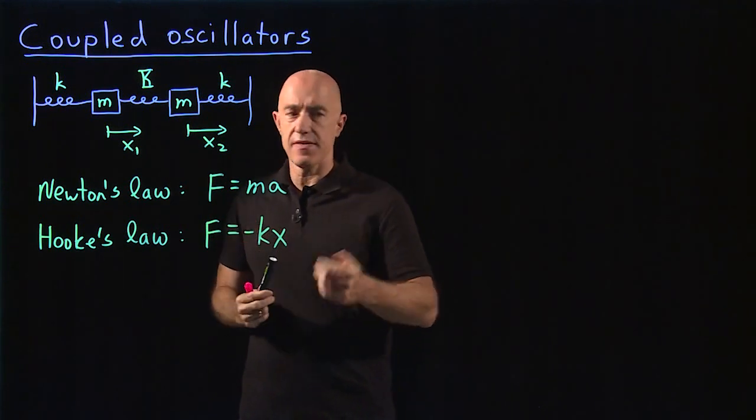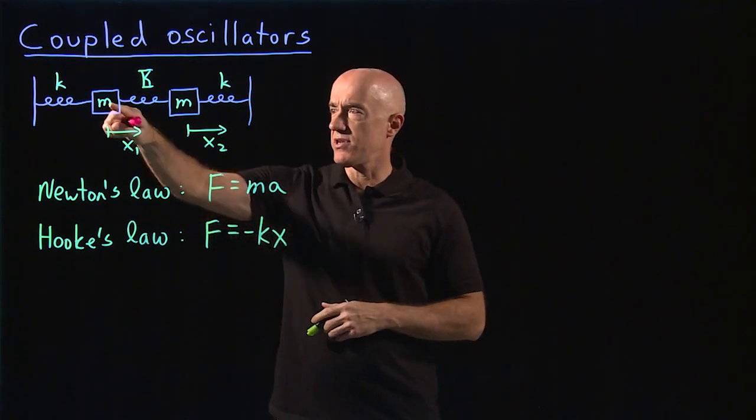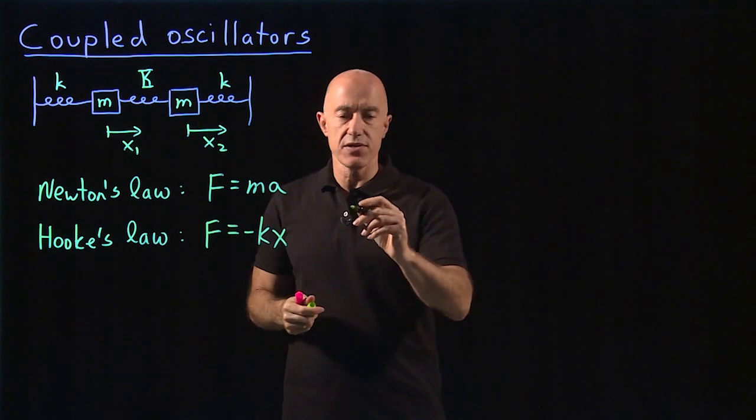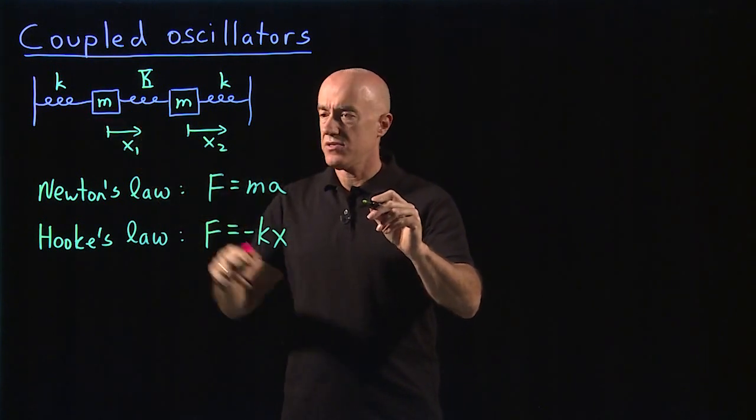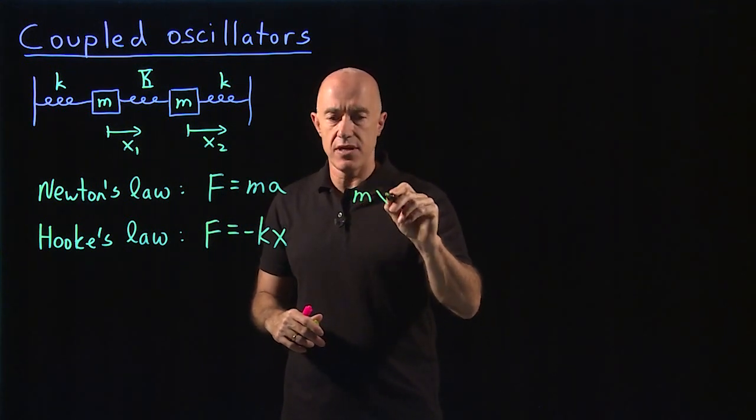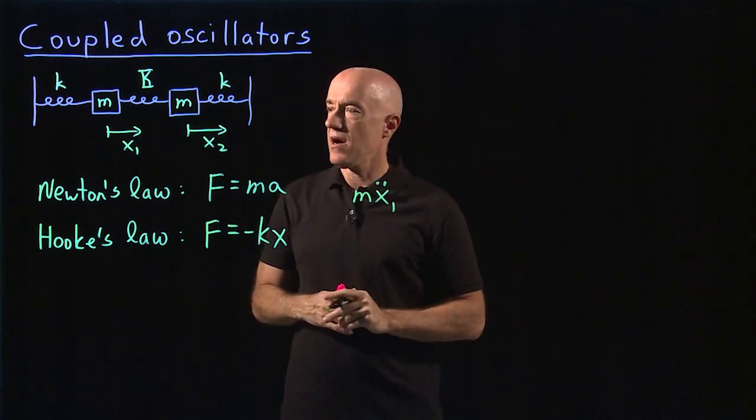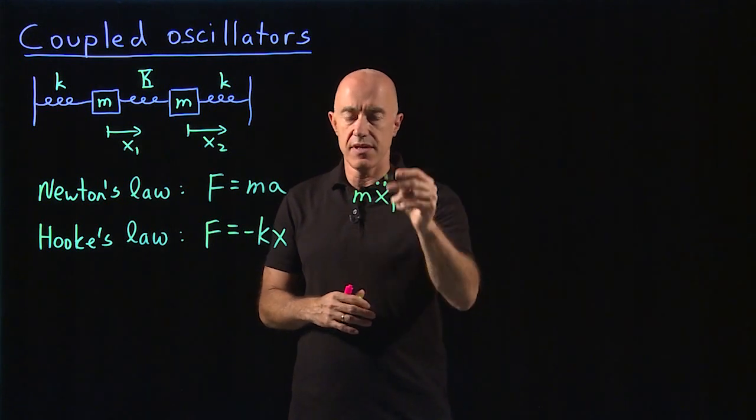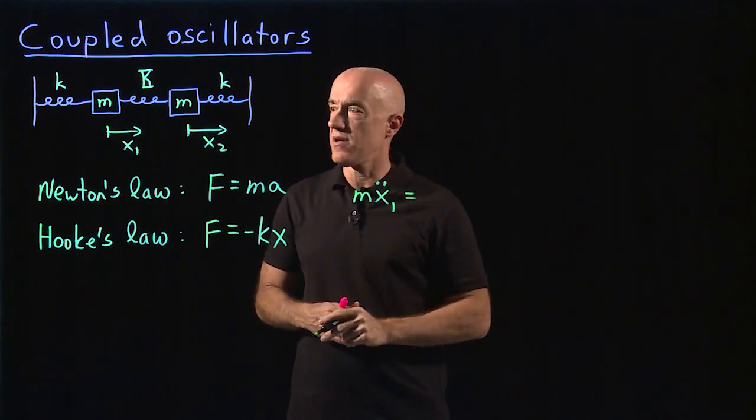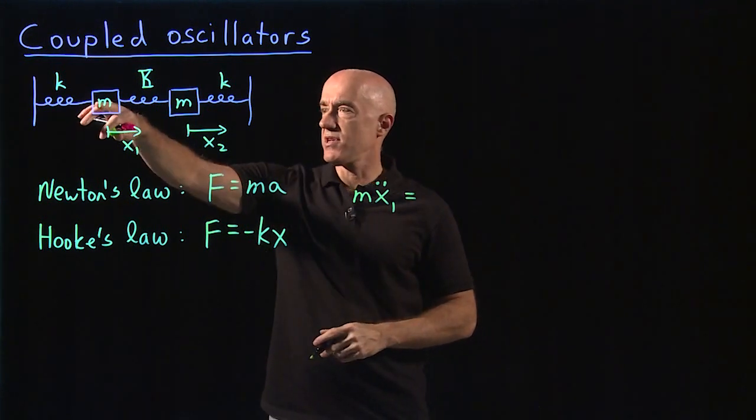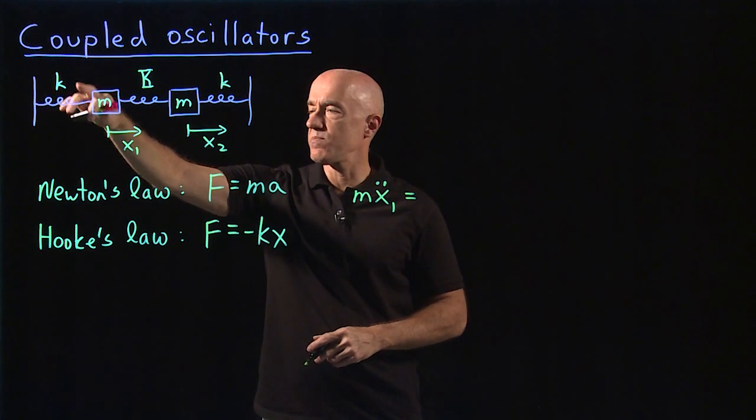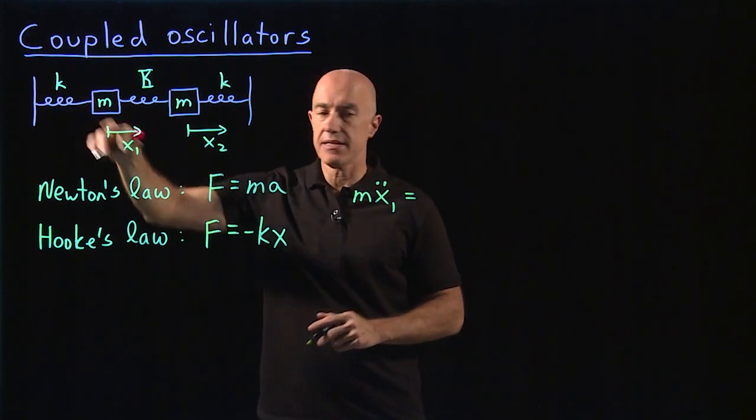So how do we write the governing equations? We have to consider the forces on each mass separately. So let's consider first the force on the first mass. So then we have mass times acceleration. So that will be mass times the acceleration of the first mass, which is the second derivative of the position x1, d squared x1 dt squared, or x1 double dot. This is supposed to be equal to the forces on it. The forces on the first mass are just due to the springs. So the force due to the first spring is just Hooke's law minus kx1.